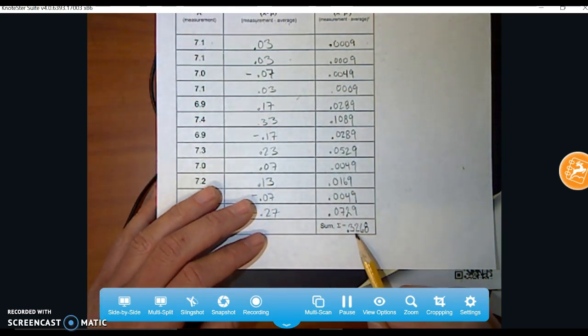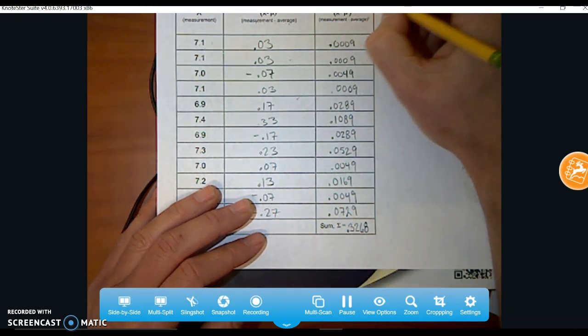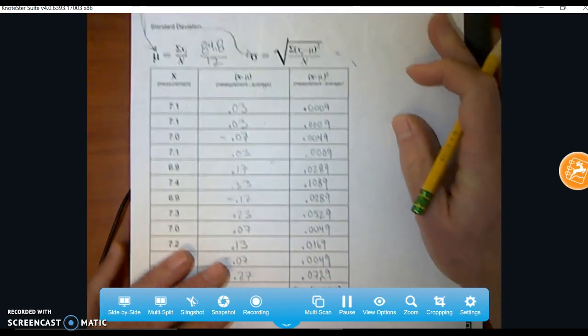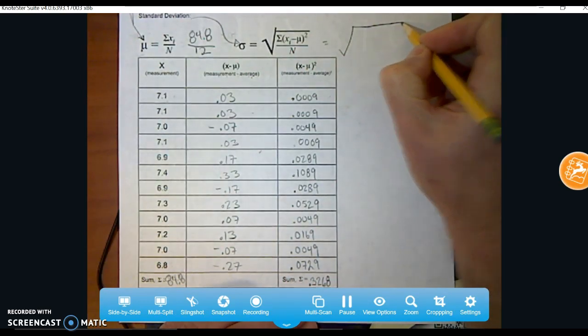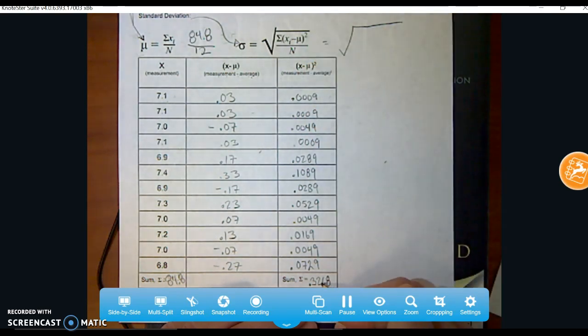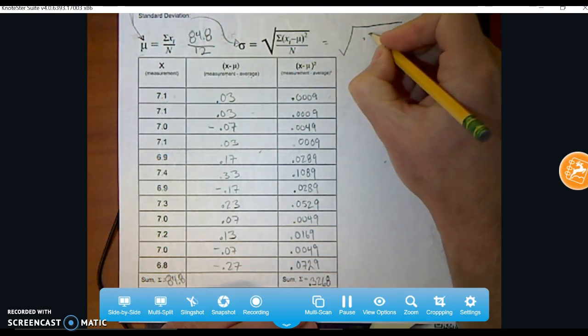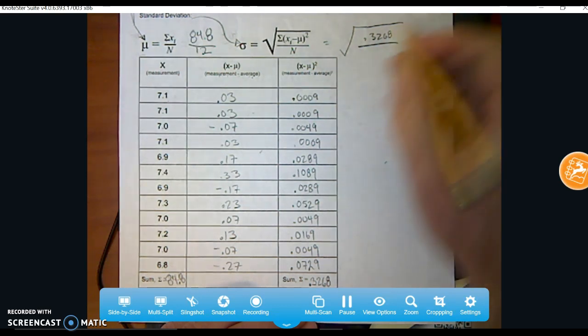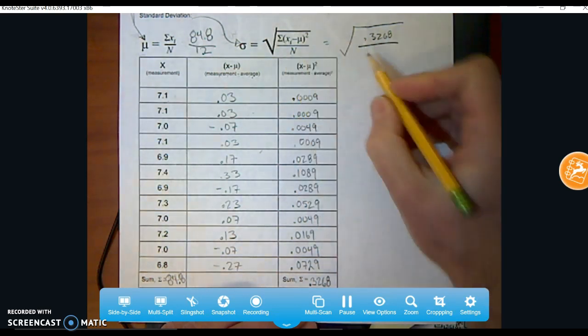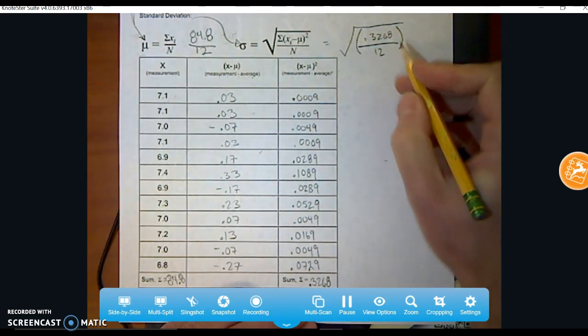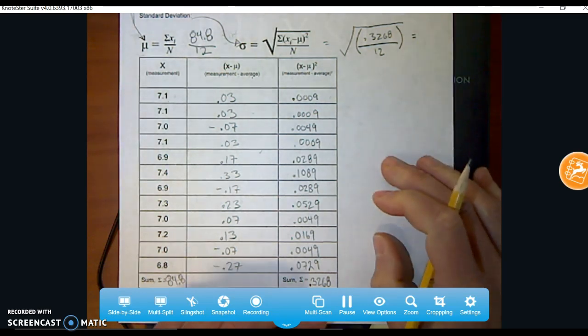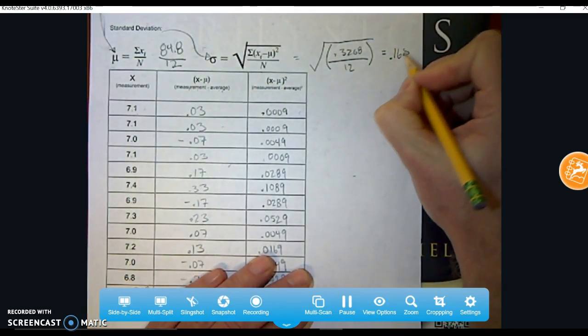All right. So finally, the last thing we're going to do is we're going to plug in these values to find this idea of the standard deviation. Give us an idea of how much the data is really spread out. So I'm going to do it over here. Put it down so you can see it a little bit. And I'm going to take the square root. And the sum of this, that's this number right down here. So for me, that was 0.3268. And we're going to divide it again by the number of values, which was 12. That whole thing needs to be calculated, and we take the square root of all of it.